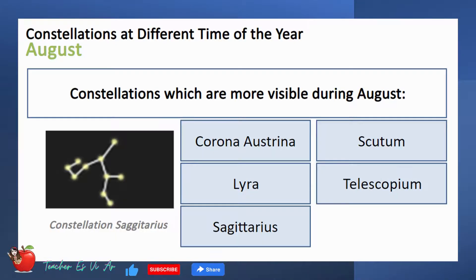These are the constellations more visible during August: Corona Austrina, Scutum, Lyra, Sagittarius, and Telescopium.